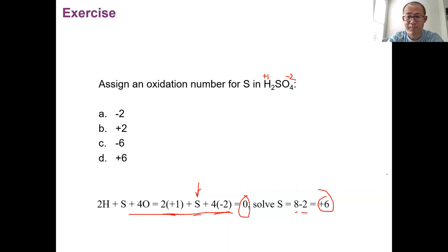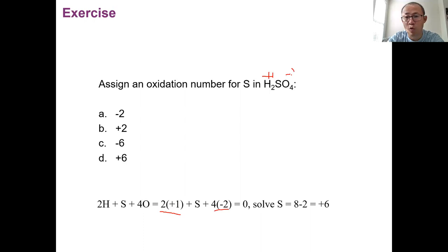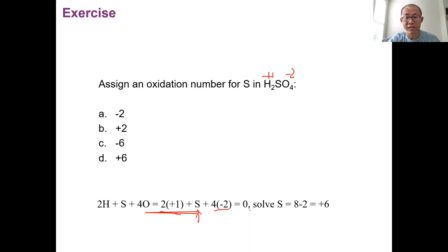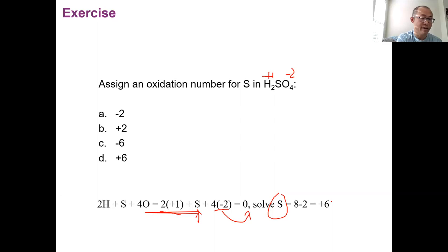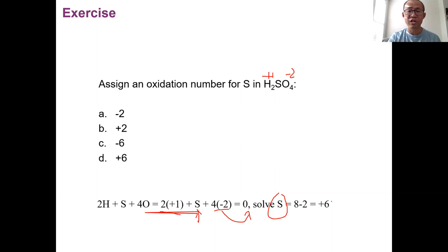Let me go over that one more time. Two times one stands for two hydrogen atoms each at +1. Four times (-2) is for four oxygen atoms at -2 each. Plus sulfur, all three terms adding together should equal zero. You solve for sulfur: sulfur = 8 - 2 = 6. So the oxidation number for sulfur is +6. That's why rule seven is very useful — it helps us determine the oxidation number for the element we don't know, based on the ones we do know.